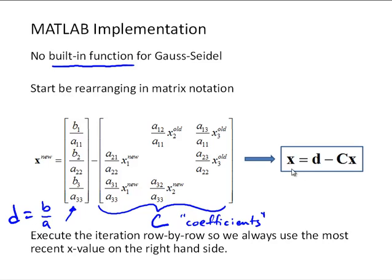Then we can write this in a compact form, x equals D minus Cx. Then for Jacobi, we can just do this over and over again and do it as a matrix operation. For Gauss-Seidel, we have to make sure that we redo this iteration, but we need to go row by row, so we're always using the most current information, as is specified by the Gauss-Seidel iteration operation.